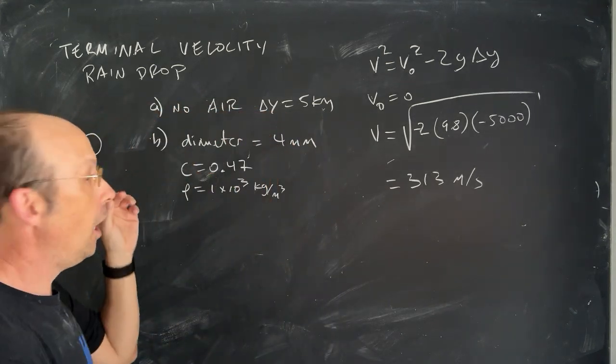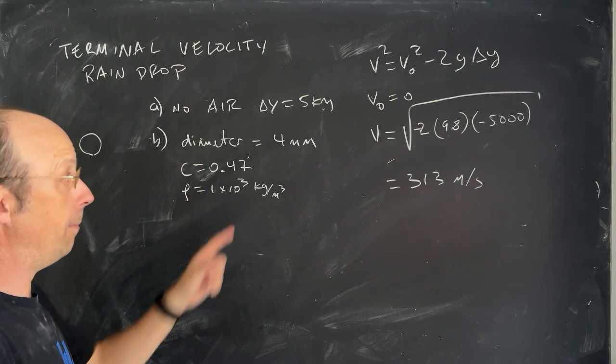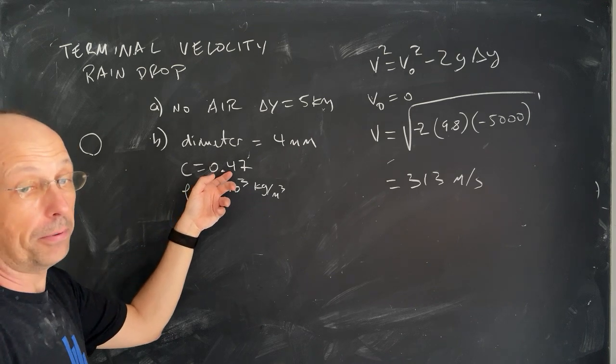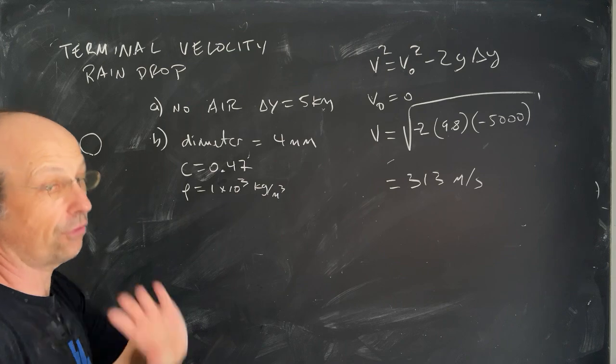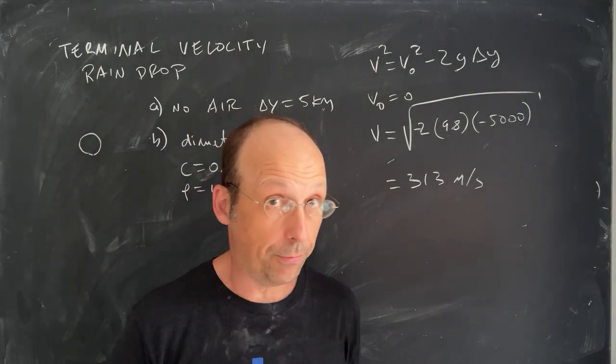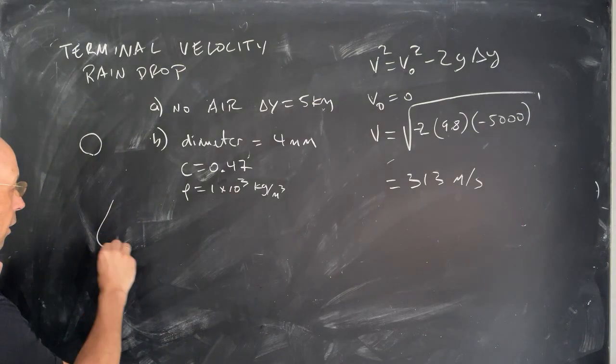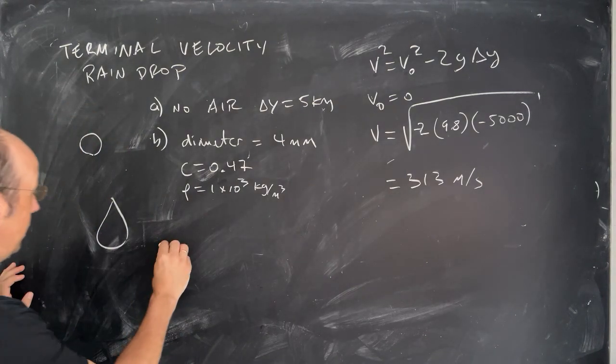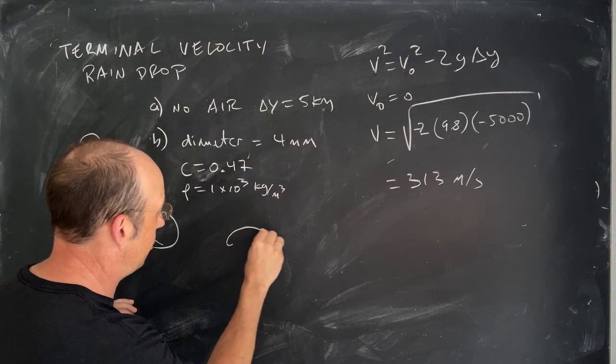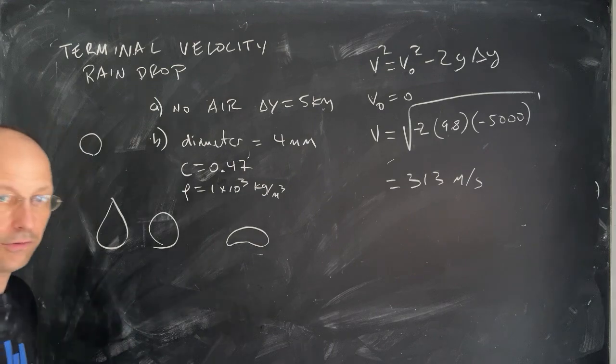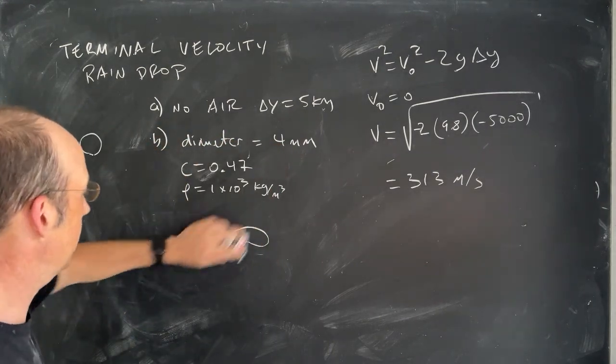Okay, so now for part B, imagine that there is air and the diameter of the drop is 4 millimeters. I looked this up. They didn't give it to the problem. Let's say the drag coefficient is 0.47. I think that's good for a sphere. But I'll tell you, raindrops are not raindrop shaped. If you have a raindrop, that's not what it looks like. It doesn't look like this. It turns out that depending on the size, a lot of times they actually end up looking like this. That's a raindrop. I know it's weird. Stuff gets weird. But let's just assume it's a sphere.